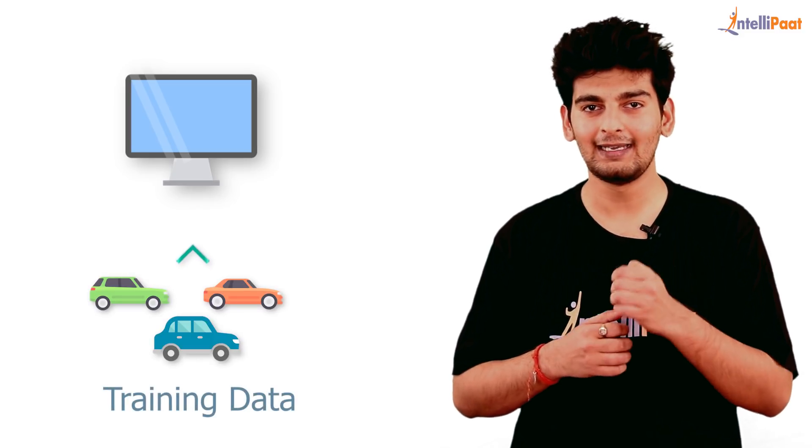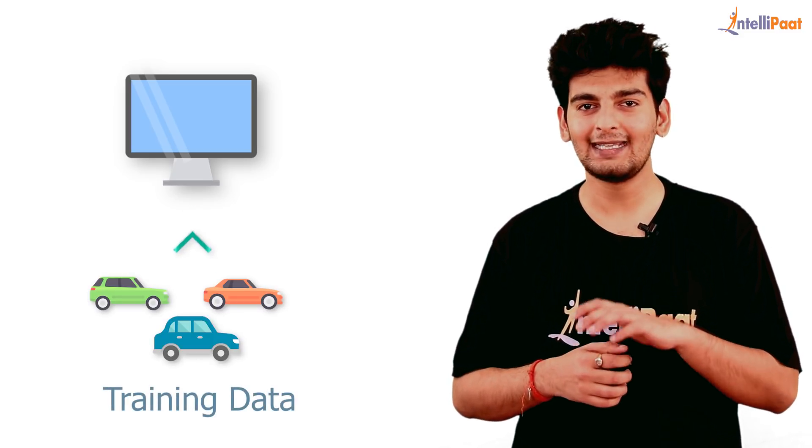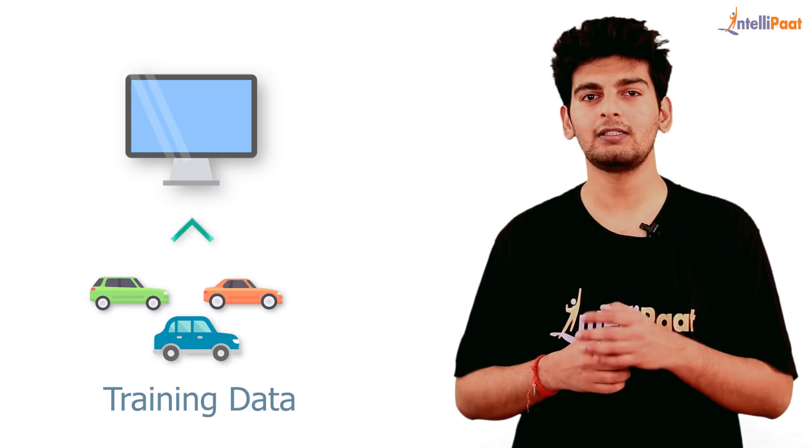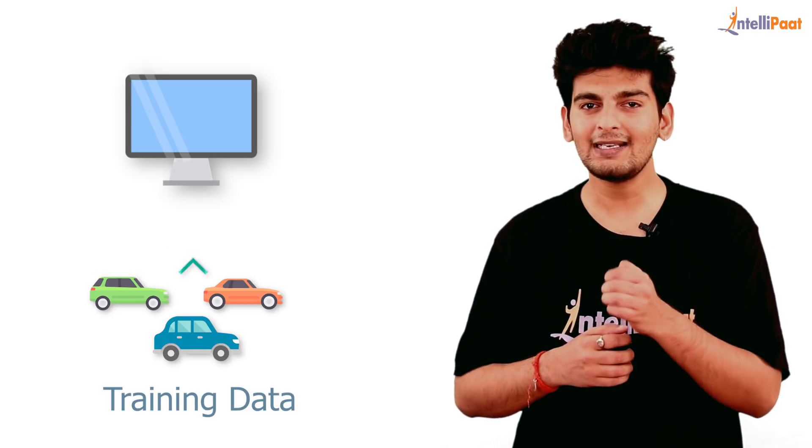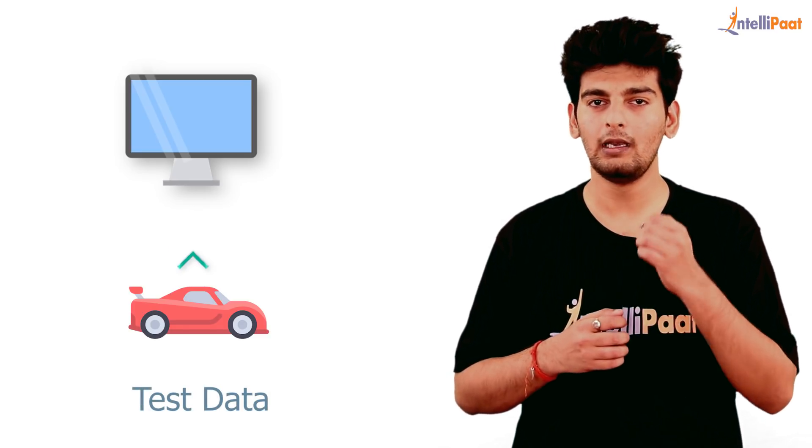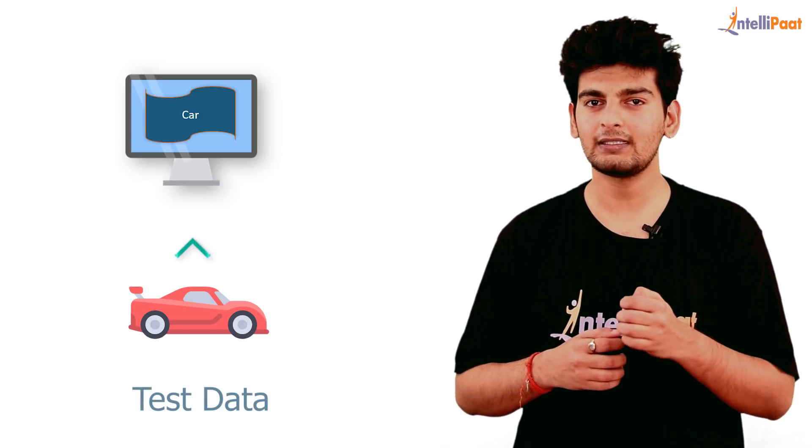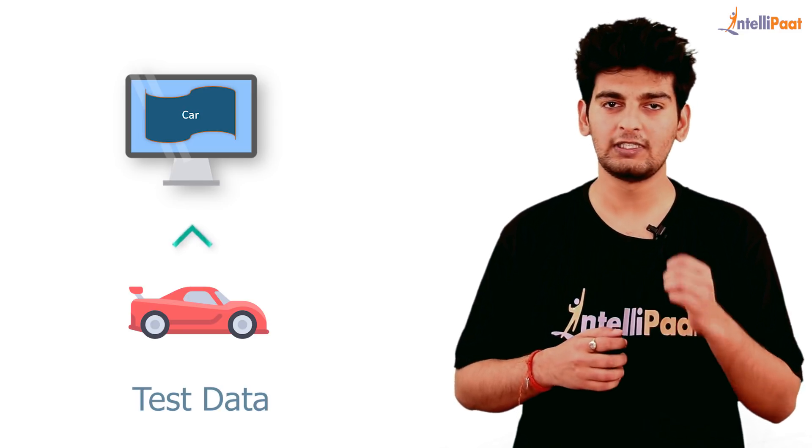And once it learns all the features associated with this car, I will give it new data or the test data to determine how well it has learned. Or in other words, first I'll feed the machine training data so that it can extract all the features from the training data. And once the training is done, I will give it test data to determine how well the learning has been done. And this is the underlying concept of machine learning.